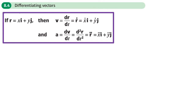This is the full section of the further kinematics chapter on differentiating vectors. We can differentiate vectors: if we have a vector for displacement, we can differentiate that to get a vector for velocity, and differentiate that again to get a vector for acceleration.